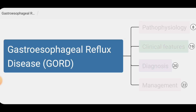In summary, we discussed gastroesophageal reflux disease including its pathophysiology, clinical features, diagnosis, and management. GORD is caused when the preventive mechanisms of the gastrointestinal tract are disturbed, leading to stomach contents refluxing into the esophagus and causing symptoms such as heartburn, regurgitation, and dysphagia. Complications can include esophagitis, Barrett's esophagus, esophageal stricture, and respiratory complications. Lifestyle modifications and anti-secretory therapy are the mainstays of management, with anti-reflux procedures as options for patients who do not respond to medical management.